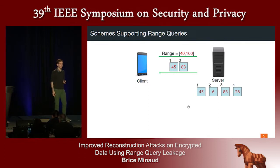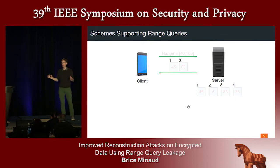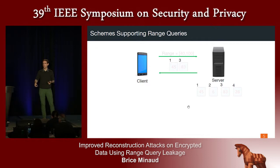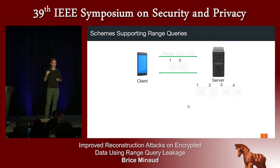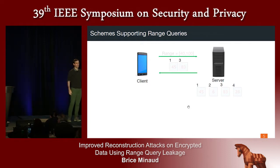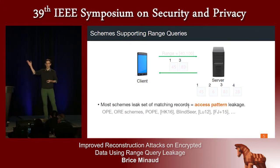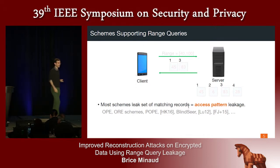Of course, the hard part is that everything in red in this picture is actually invisible to the server. The server doesn't see the queried range, doesn't see the values of the records, and doesn't see the values of the records it returns. From the server's point of view, it has four records, receives a query, some crypto magic happens, and then it learns that records one and three match the query and returns those encrypted records. What you might observe is that the server does still learn something — namely that records one and three matched a range query. In the literature, this is called access pattern leakage.